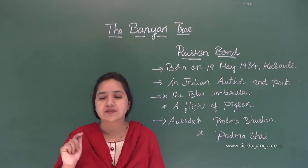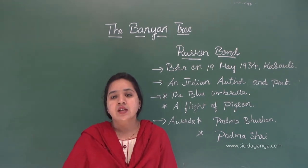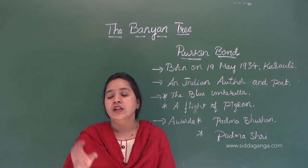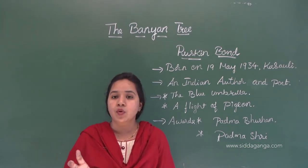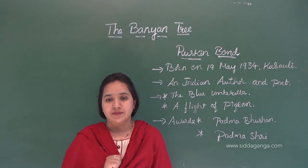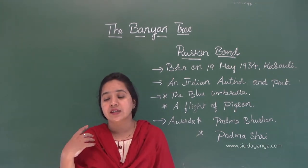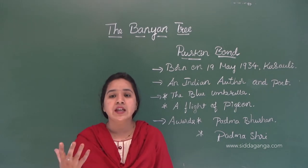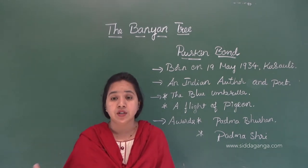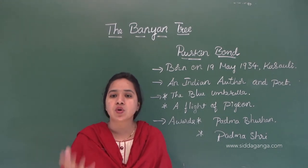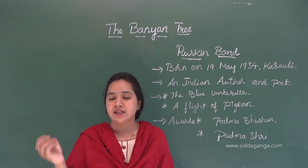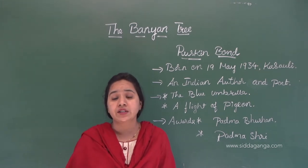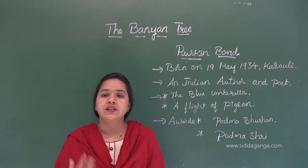The author Ruskin Bond is narrating and describing the scene of the fight between a mongoose and a snake. When he was a child, he was living with his grandparents. There was a huge banyan tree, and there he saw the two animals — cobra and mongoose — fighting terribly.